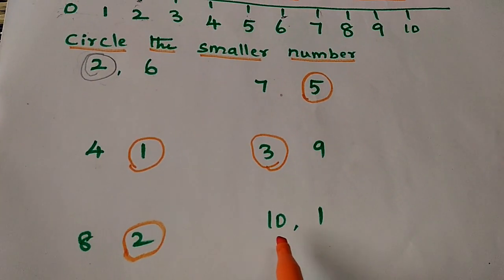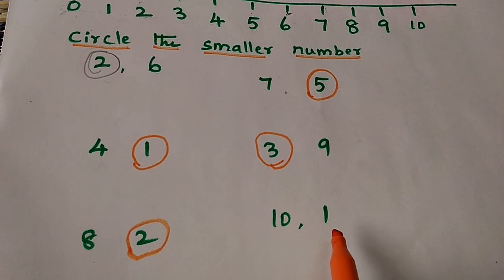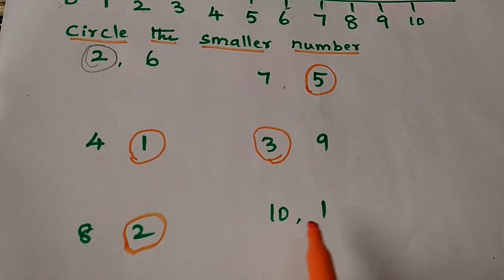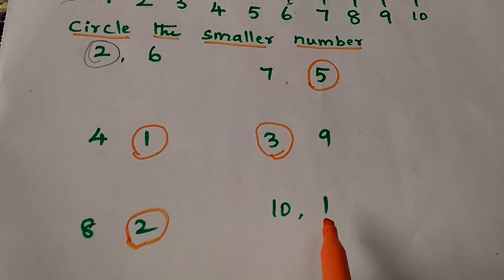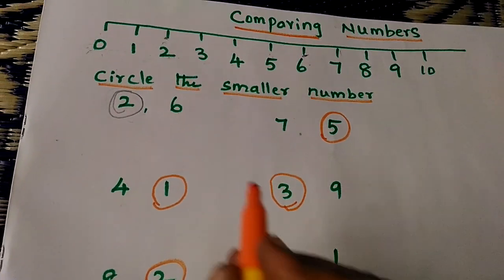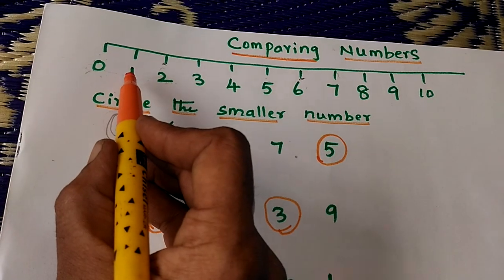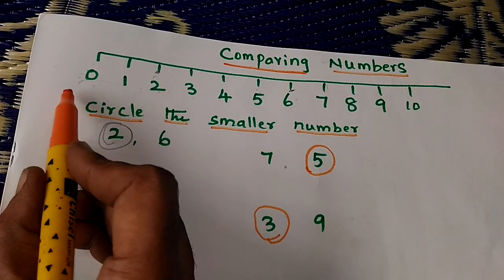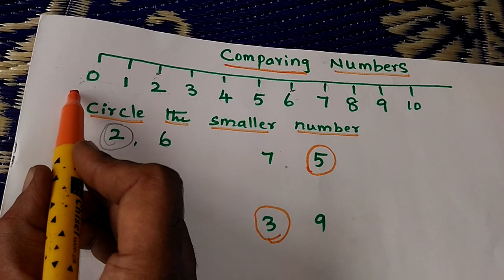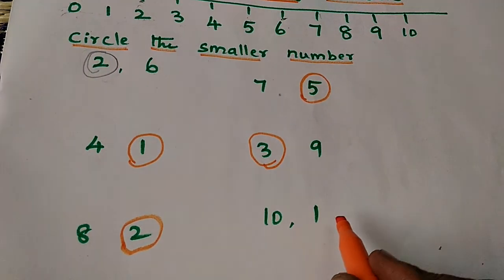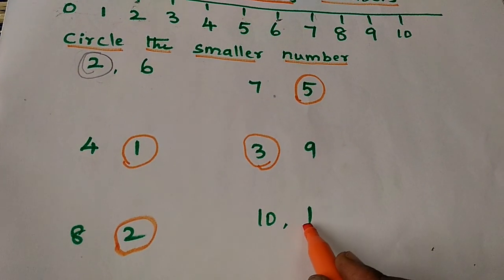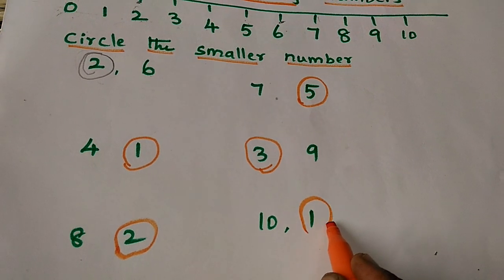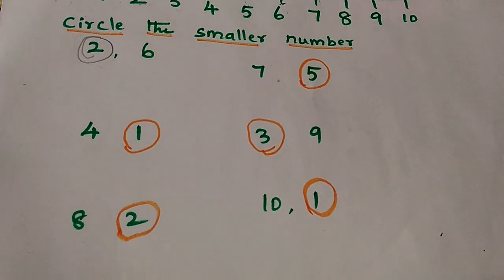Then, 10 and 1. Which one is the smaller number — 10 or 1? 1. Where is 1? Here. Where is 10? Here. 1 is closer to 0, so 1 is the smaller number. 1 is smaller than 10.